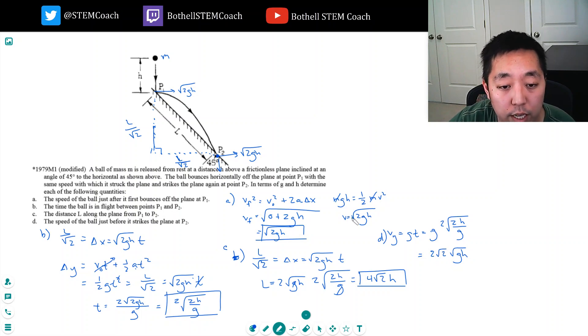And its v_x direction is square root of 2gh. So v, which would be the magnitude of its velocity, is the square root of v_x squared plus v_y squared.